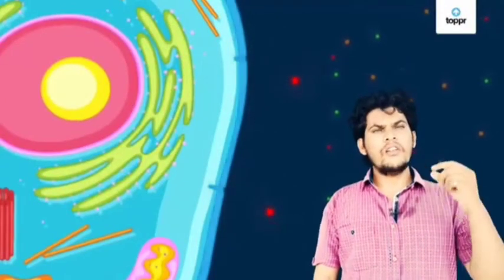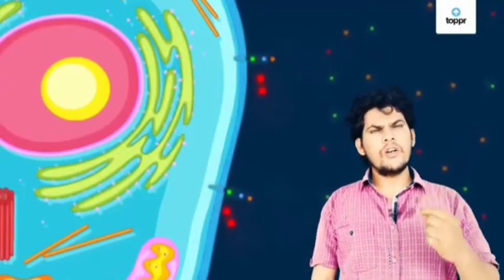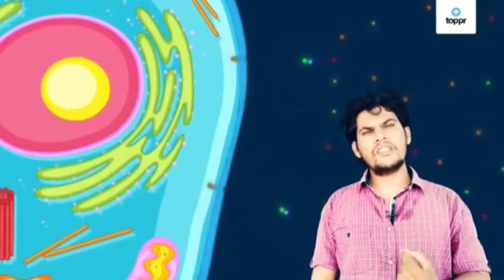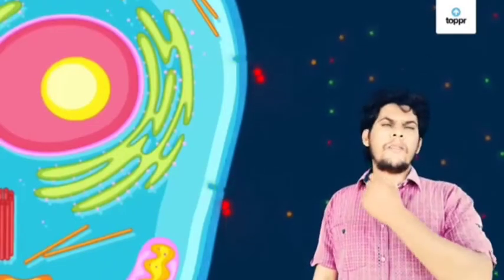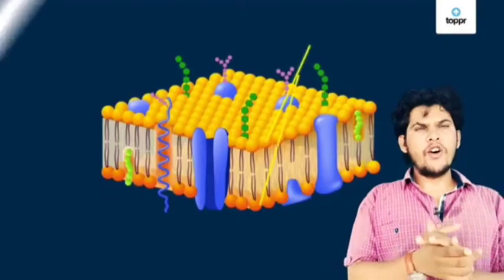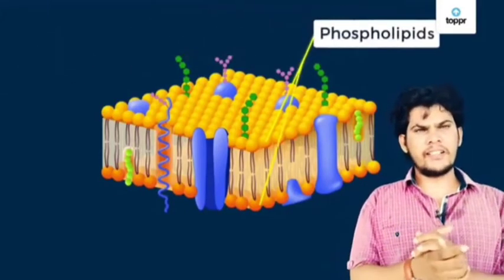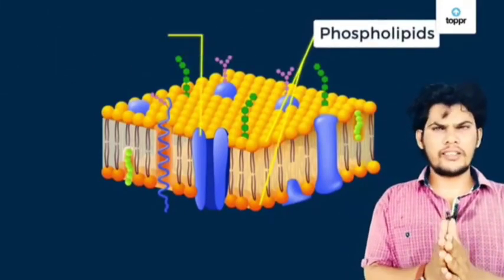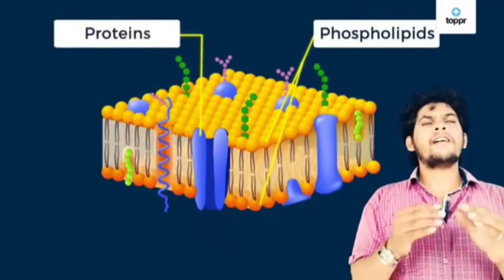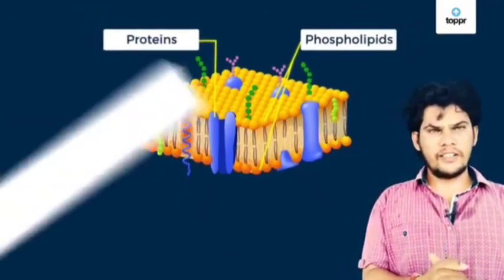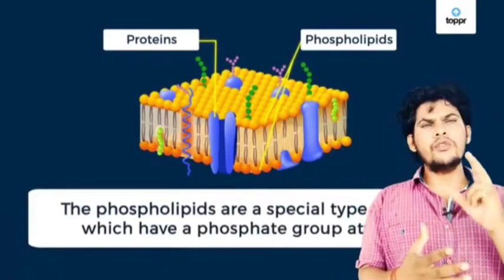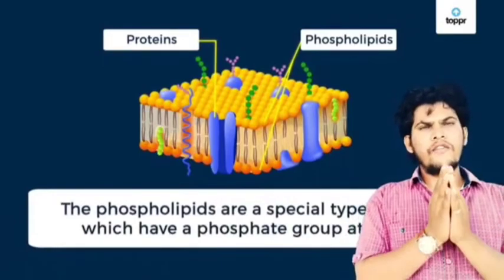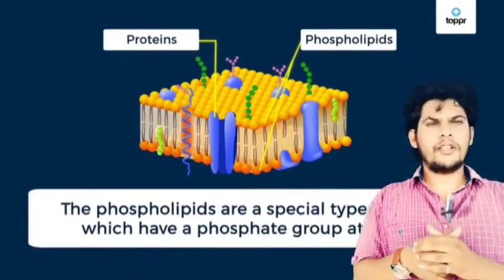Just as our home is constructed with bricks, cement, and concrete, the cell membrane is also made up of two types of substances — they are called phospholipids and proteins.